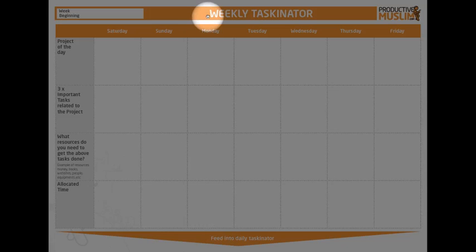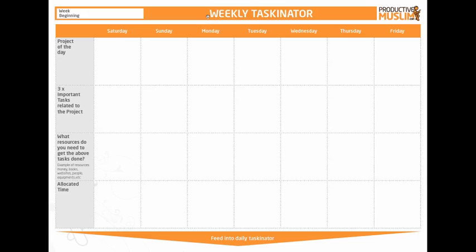So that's the weekly taskinator — a very simple tool to give you a clear picture of where you'll be spending your energy and time. People say, well, can't I just do it as the day comes? Yes, you can. But once you have this plan in place, you'll realize that every single week you are advancing in your life, achieving something, and moving ahead with different projects rather than being stuck doing the same thing over and over.